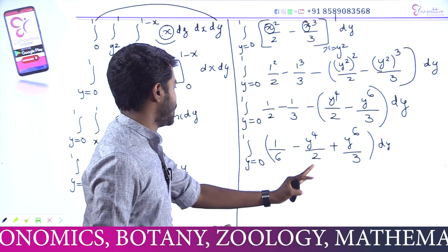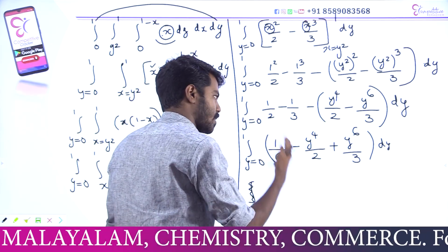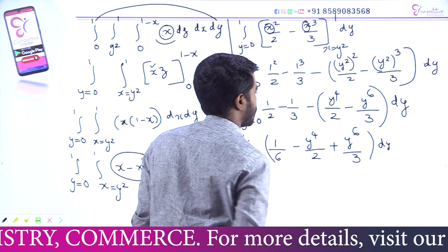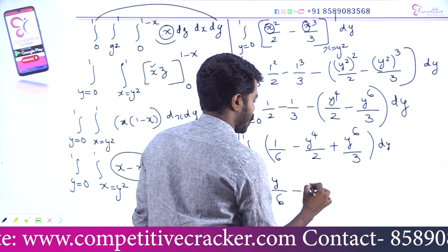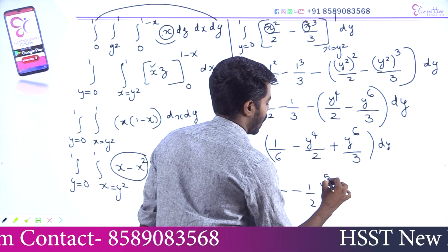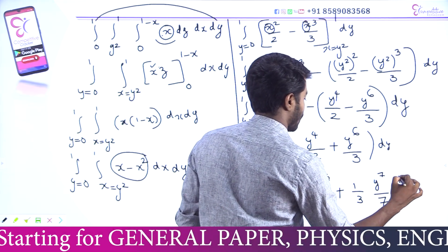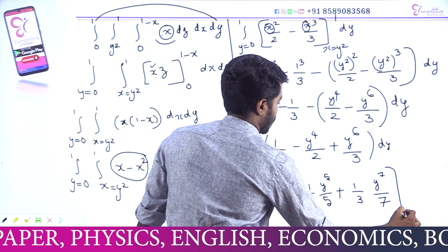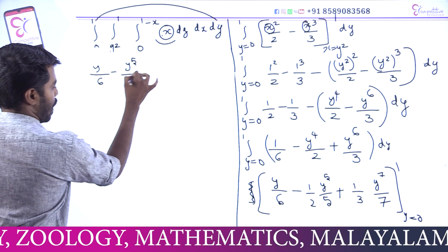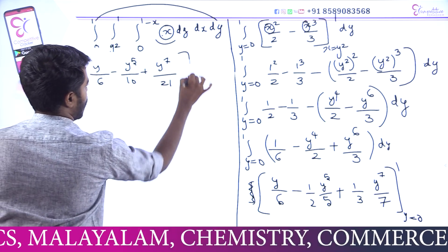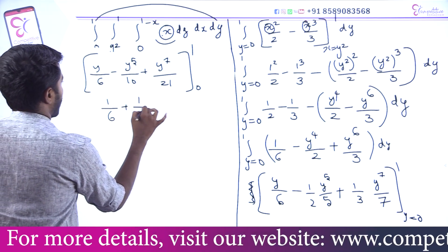Now let's integrate with respect to y. 1 by 6 is constant — constant integration gives 1 by 6 times y = y by 6. Minus y⁴ by 2: 1 by 2 is constant, integrating y⁴ gives y⁵ by 5. Plus y⁶ by 3: 1 by 3 is constant, integrating y⁶ gives y⁷ by 7. Limit 0 to 1: gives y by 6 minus y⁵ by 10 plus y⁷ by 21.